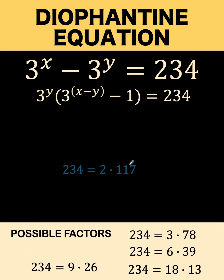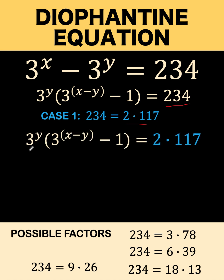The first case is when we have 2 times 117 equals 234. So we can replace this 234 by 2 times 117. Then, this 3 raised to y is equated to the first integer factor here, and the second one is equated to this 117 to arrive at this.